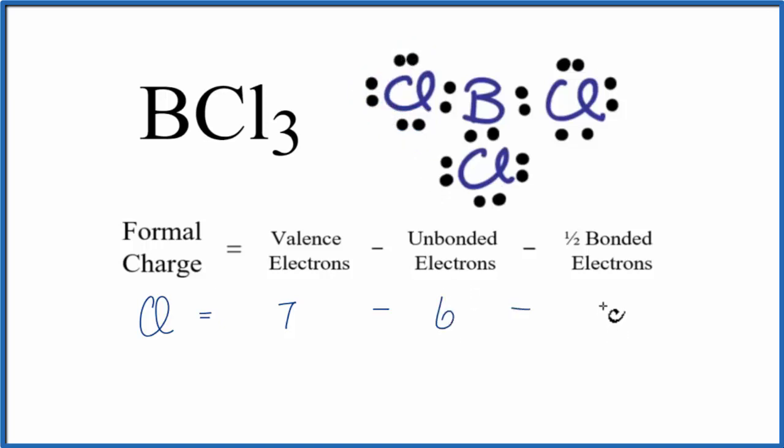We'll subtract from that half of the bonded electrons. That's these two right here. So 2 over 2. 7 minus 6 minus 1, that equals 0.